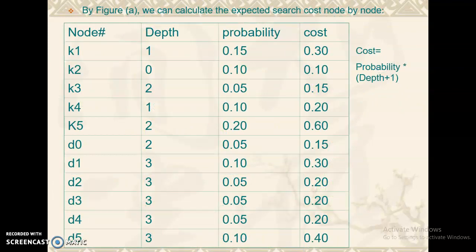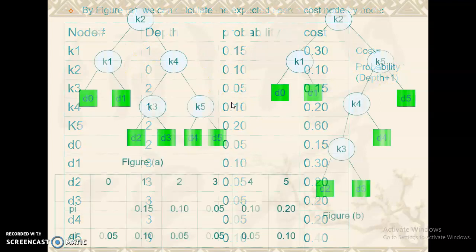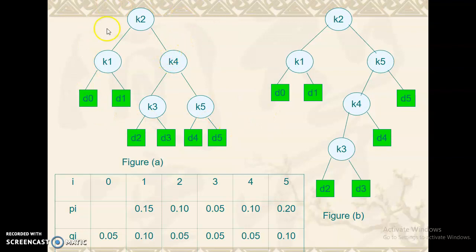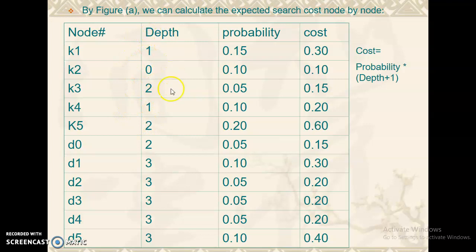The table has three columns: depth of a node, probability of searching that node, and cost of searching that node. We use the formula: cost = probability × (depth + 1). For the first tree, the depth of K2 is 0, K1 and K4 are at depth 1, and K3 and K5 are at depth 2. Depths for dummy nodes D0 and D1 are also recorded. Probabilities — successful and failure — are given, and cost of searching each node is computed using the formula. Finally, all costs are summed to find the total cost of the BST.